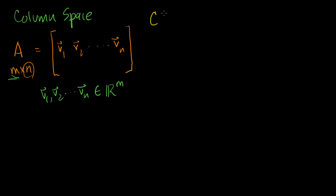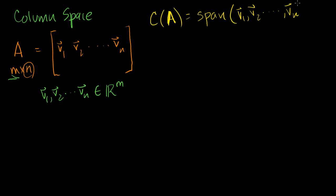The column space of A is all the linear combinations of these column vectors. What are all the linear combinations of a set of vectors? It's the span of those vectors — the span of v1, v2, all the way to vn. The span of any set of vectors is a legitimate subspace. It definitely contains the zero vector: if you multiply all of these vectors by 0, which is a valid linear combination, you'll see that it contains the zero vector.